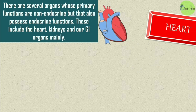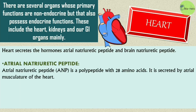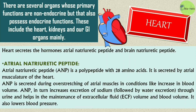From the heart, some hormones are secreted: atrial natriuretic peptide (ANP) and brain natriuretic peptide (BNP). ANP is a polypeptide with 28 amino acids, secreted by the atrial musculature of the heart. ANP is secreted during overstretching of atrial muscles in conditions like increased blood volume. ANP increases excretion of sodium followed by water excretion through urine, helps in maintenance of ECF volume and blood volume, and also lowers blood pressure.